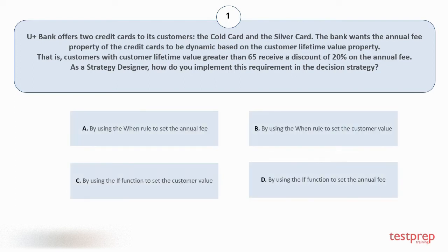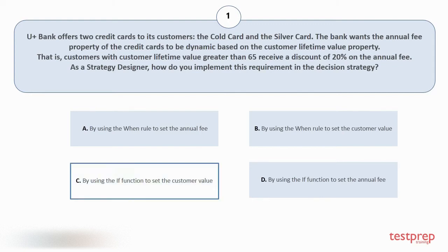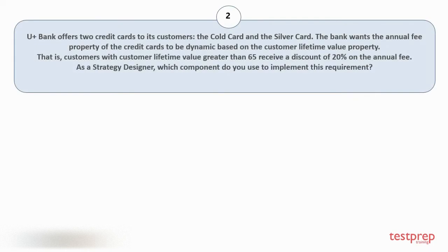Your options are: A) by using the WIN rule to set the annual fee; B) by using the WIN rule to set the customer value; C) by using the IF function to set the customer value; D) by using the IF function to set the annual fee. The correct answer is option D.